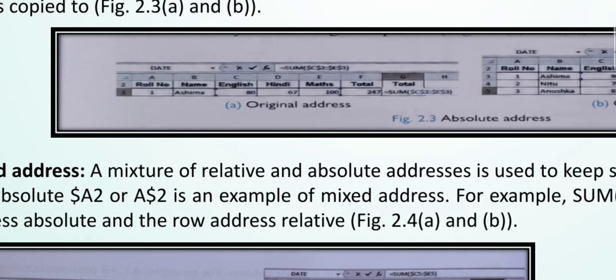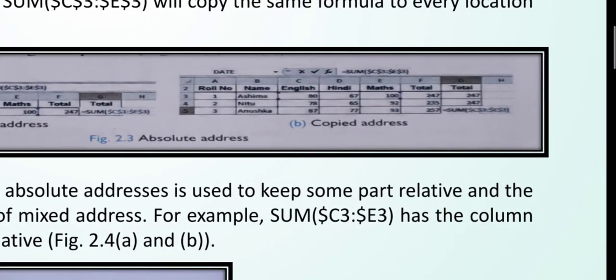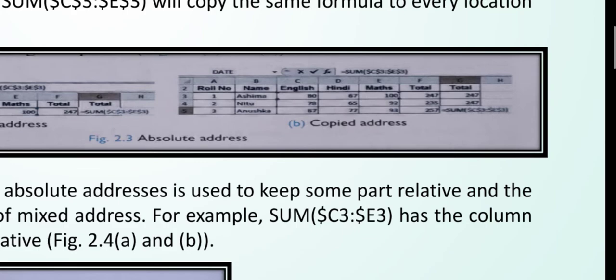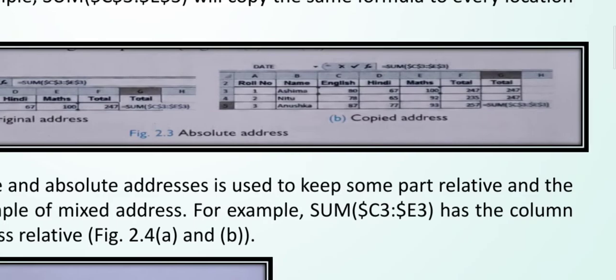For example, SUM, here you can see the formula. The dollar sign is C, dollar sign 3 to lock the location of a cell. Here you can see the copied address and original address.